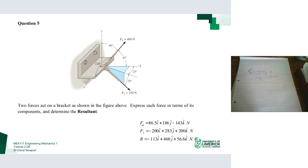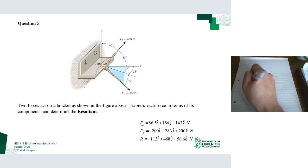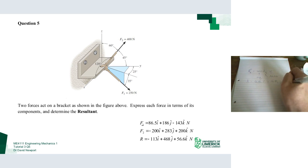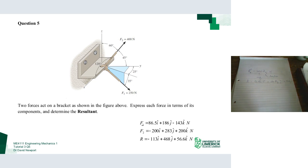To get the direction of vector F2, we look at the problem. We're given angles with respect to the different axes, so we'll use the direction cosine formula: the unit vector equals cosine(θx) i-hat plus cosine(θy) j-hat plus cosine(θz) k-hat.